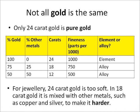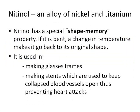Not all gold is the same. Only 24-karat gold is pure gold — that's 100% gold with no other metals. Anything less than that is an alloy, a mixture. My 18-karat ring, for example, is mixed with a bit of copper and a bit of silver. The reason we mix it with other metals is to make it harder — we don't want our rings to be too soft.